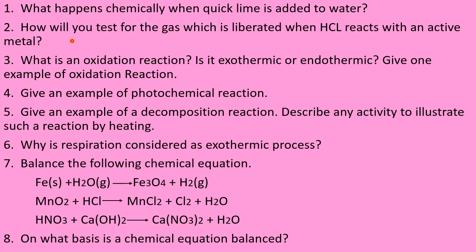Question number two: how will you test for the gas which is liberated when HCl reacts with an active metal? In the reaction between a metal and an acid, the liberated gas is hydrogen. Hydrogen is checked by bringing a burning matchstick near the test tube where you are conducting the test. Hydrogen burns with a pop sound, which indicates the liberated gas is hydrogen.